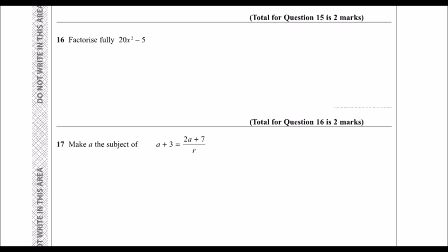Okay, factorize fully. So factorize means put into brackets. What can I take out of this? They're both in the 5 times table, so I can take the 5 out to start with. So 5, and then 4x squared minus 1 left inside.